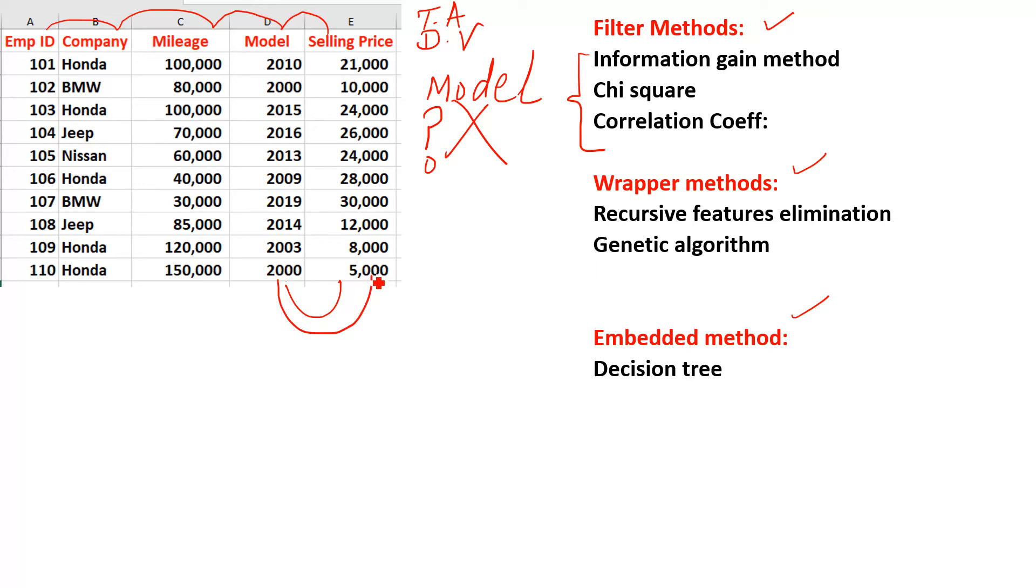Same example: you can see easily that as the model of the vehicle increases, the selling price increases. But we can have thousand records in practical life, so it will be difficult to visualize. Then you can make a graph on Excel or Python to visualize the data. When you make the graph between these two, you will get more or less a straight line. If you calculate the correlation between these two variables, maybe the correlation is 0.90, because correlation ranges between 0 to 1. Maybe it is 90%, 95%, or 99%—whatever it means, we will select this feature.